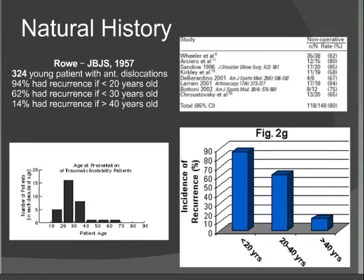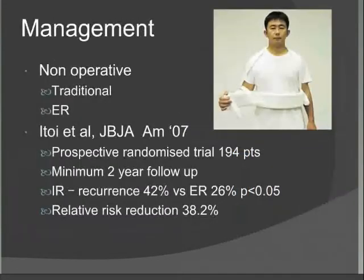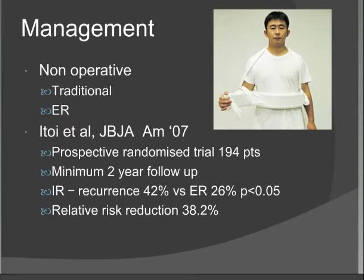For those treated non-operatively, the traditional position is the arm in adduction and internal rotation. However, a good study from Japan by Ito et al. — a prospective randomised trial of 194 patients — placed patients in an external rotation brace at 10 degrees. With a minimum two-year follow-up, recurrence was significantly different: 42% in the internally rotated group versus 26% in the externally rotated group, a relative risk reduction of 38.2%. The mechanism is that in external rotation the subscapularis is under tension, reducing the anterior capsular opening and pressing the labrum against the glenoid to aid healing.